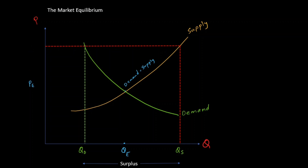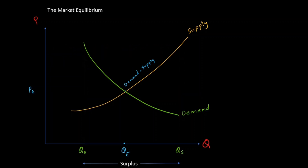Coming back to the graph, pushing the price down shows two things that happen when price falls. First, the quantity demanded slowly starts increasing. Second, the quantity supplied slowly starts decreasing. This continues until they meet at a common point of intersection, and at that point the equilibrium of the market is restored — back to the equilibrium quantity and the equilibrium price.